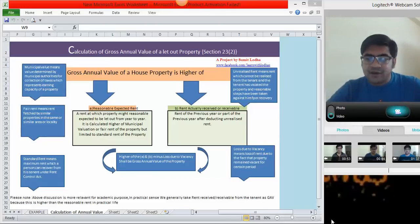You can see on the left hand side of your screen that there is one chart depicting the clear calculation of gross annual value which says gross annual value of a house property is higher of two amounts. What are these two figures? First is reasonable expected rent and another is actual rent received or receivable.